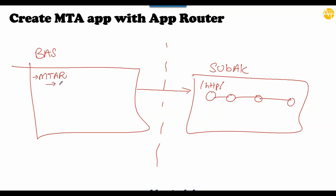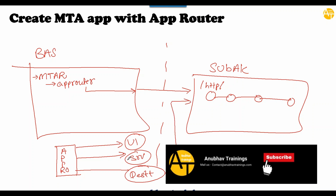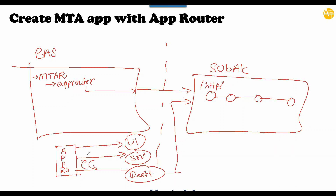We will use the Business Application Studio today and first create a multi-target application (MTA) module. In this MTA module we will add an app router module to create an endpoint talking to our HTTP service. An app router module in SAP BTP Cloud Foundry environment works as a reverse proxy for your application — it has the ability to route to different services like a UI service, an API service, or a destination service to connect and read data from an external API.